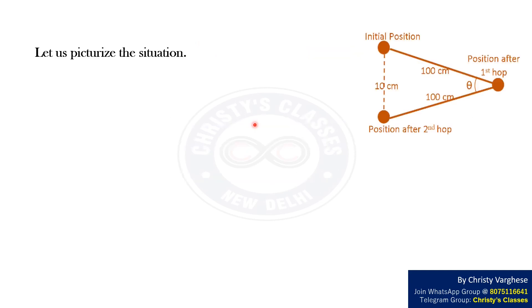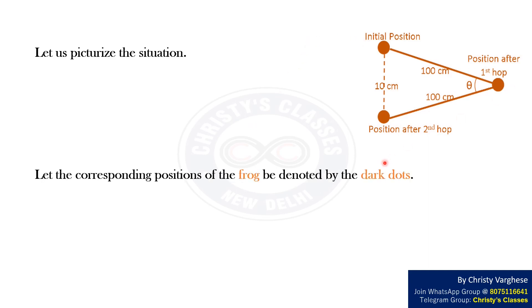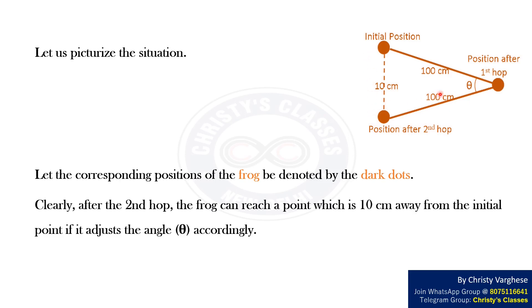Let us visualize the situation. Let the corresponding positions of the frog be denoted by the dark dots. Clearly, after the second hop, the frog can reach a point which is 10 centimeters away from the initial point if it adjusts the angle theta accordingly. Hence, option B is the right answer.